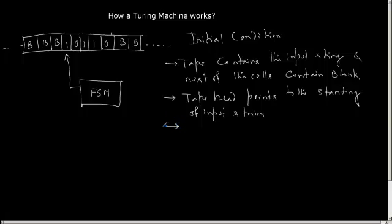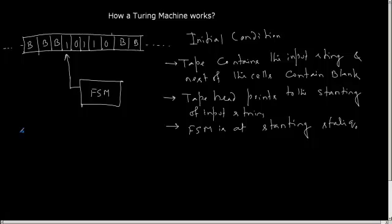The initial condition of the FSM is that it is at the starting state Q0. Now, on every move, the tape head reads the content of the cell. Then, depending on the transition function defined, the tape head can write a new tape alphabet into the cell, and based on the transition function, the tape head can move towards the right or towards the left.